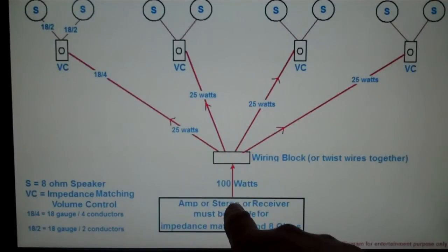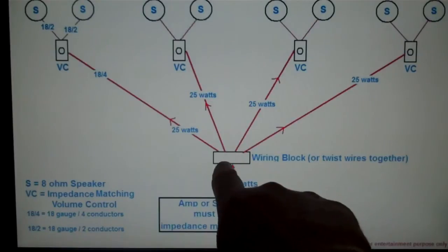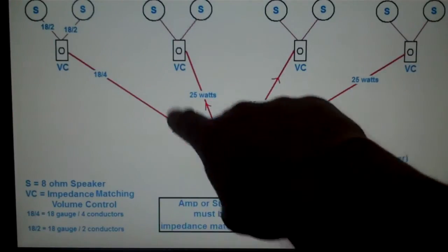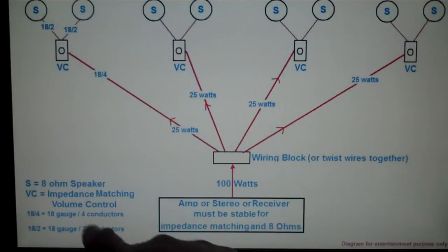And that's the wire that's run from the amplifier to this connecting block, and then from the connecting block, one wire to each volume control. That is an 18-four, and that's on the diagram.